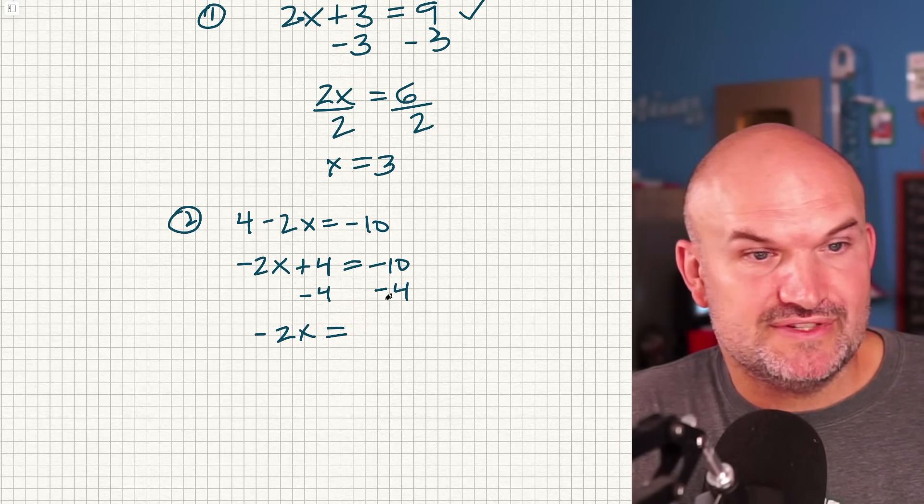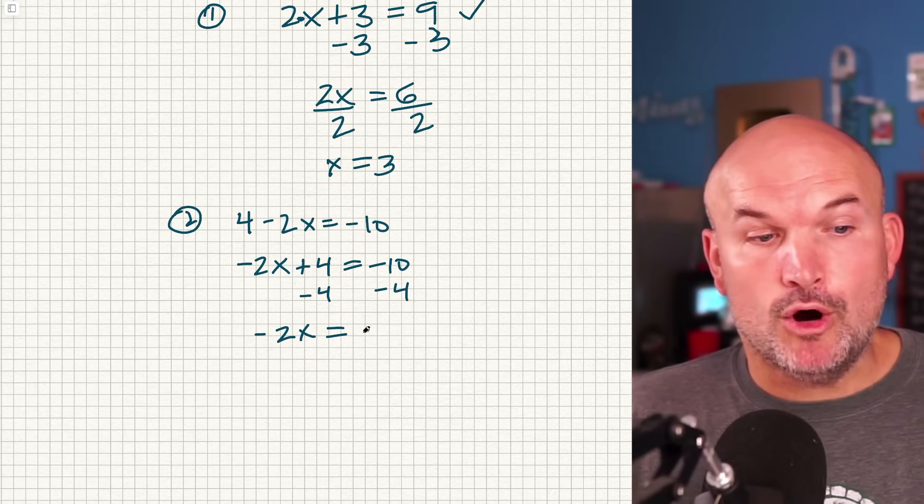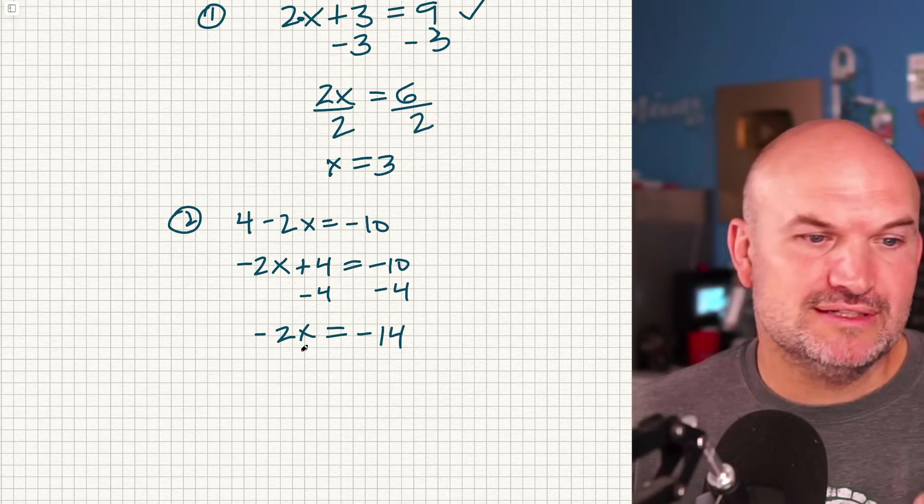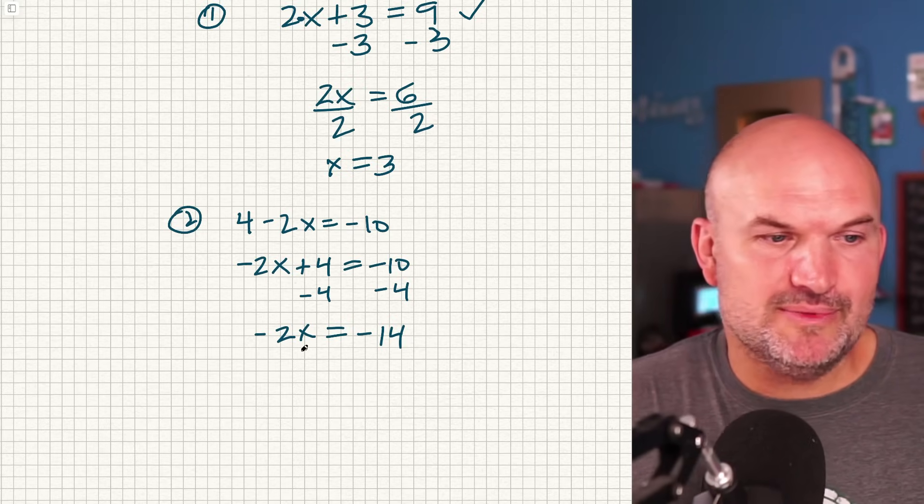Some students will write that in as negative 6, but it's not. If you owe me $10 and you borrow four more dollars, you now owe me $14. So it's very important to make sure that you have that strength with your negative numbers. And then again, just like the first example,